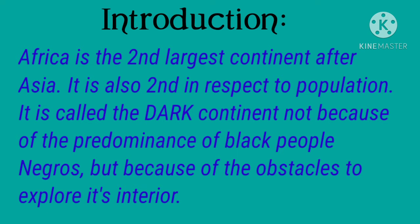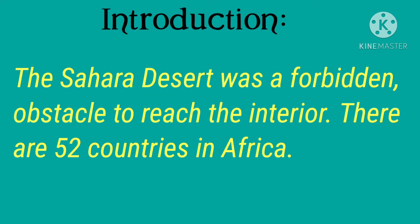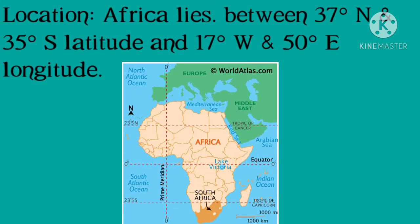Africa is called the dark continent not because of the predominance of black people or Negroes, but because of the obstacles to exploring its interior. The Sahara Desert was a forbidden obstacle to reaching the interior. There are 52 countries in Africa.